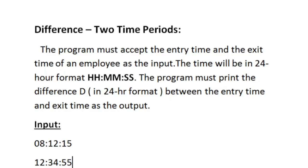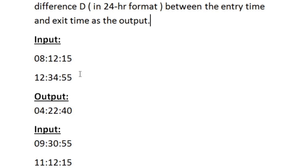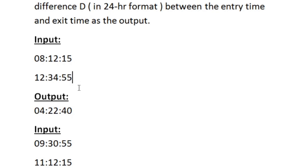This is the question asked in today's daily challenge in SkillRack. The program must accept the entry time and exit time of an employee as input. The time will be in 24-hour format, and the program must print the difference D between the entry time and exit time as the output, also in 24-hour format. We are given two lines of input — the first line has the entry time and the second line has the exit time. Our task is to calculate the time between these two time intervals.